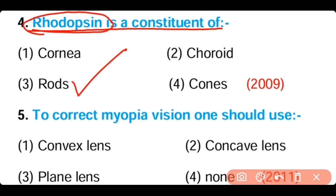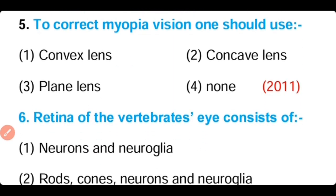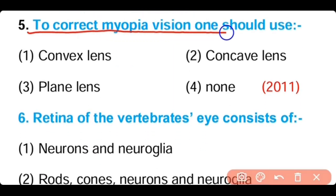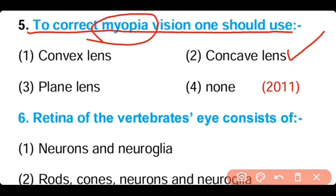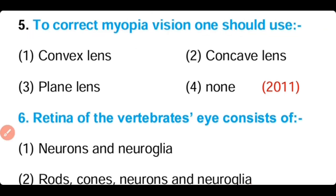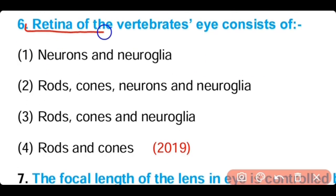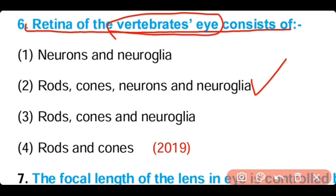Rhodopsin is a pigment present in rods, which helps detect dim light. Question number five: To correct myopia, one should use (a) convex lens, (b) concave lens, (c) plane lens, (d) none of these. The answer is option two — myopia or short-sightedness can be corrected by using a concave lens. Question number six: The retina of the vertebrate's eye consists of (a) neurons and neuroglia, (b) rods, cones, neurons and neuroglia, (c) rods, cones and neuroglia, (d) rods and cones only. The answer is option two — the retina of the vertebrate's eye consists of rods, cones, neurons, and neuroglia cells.